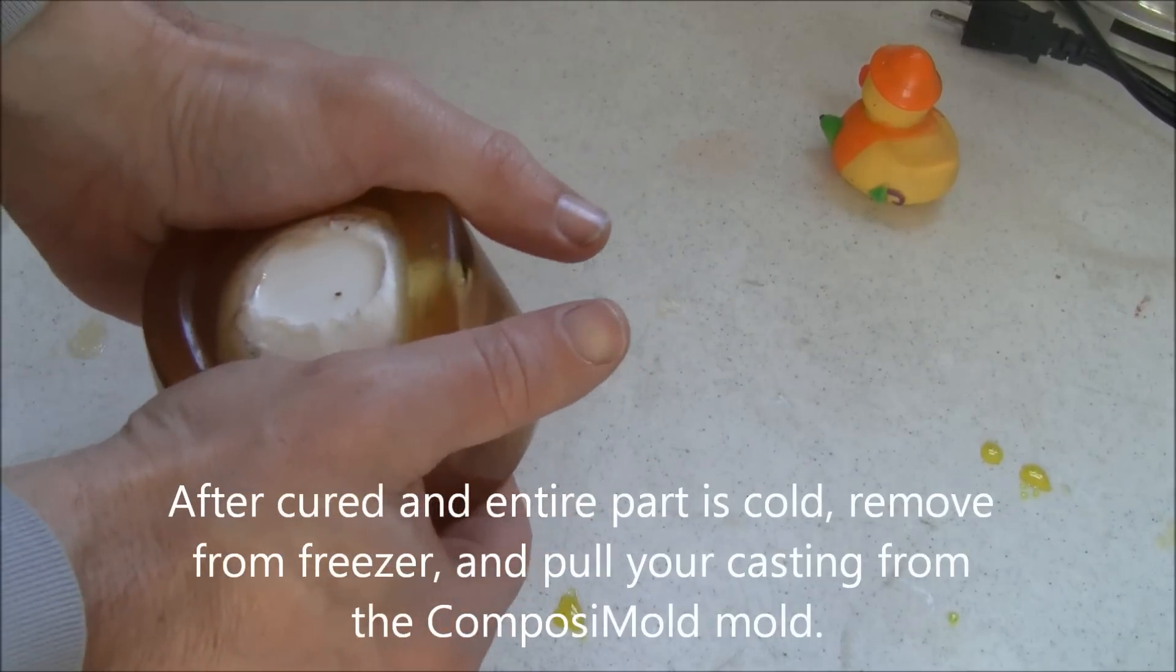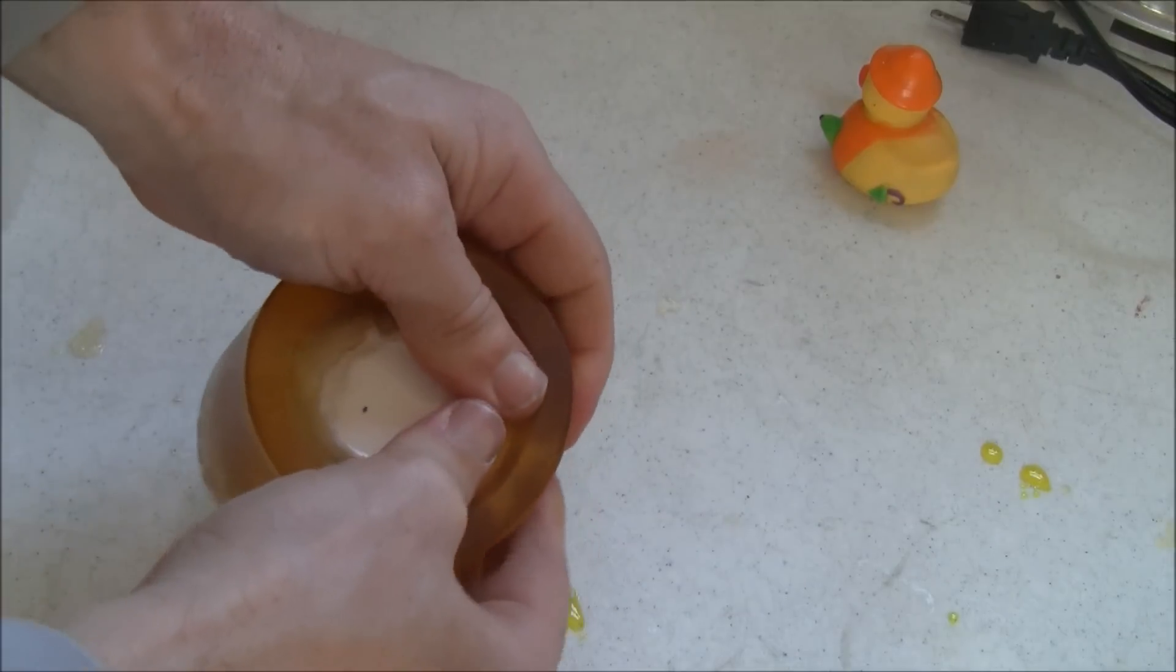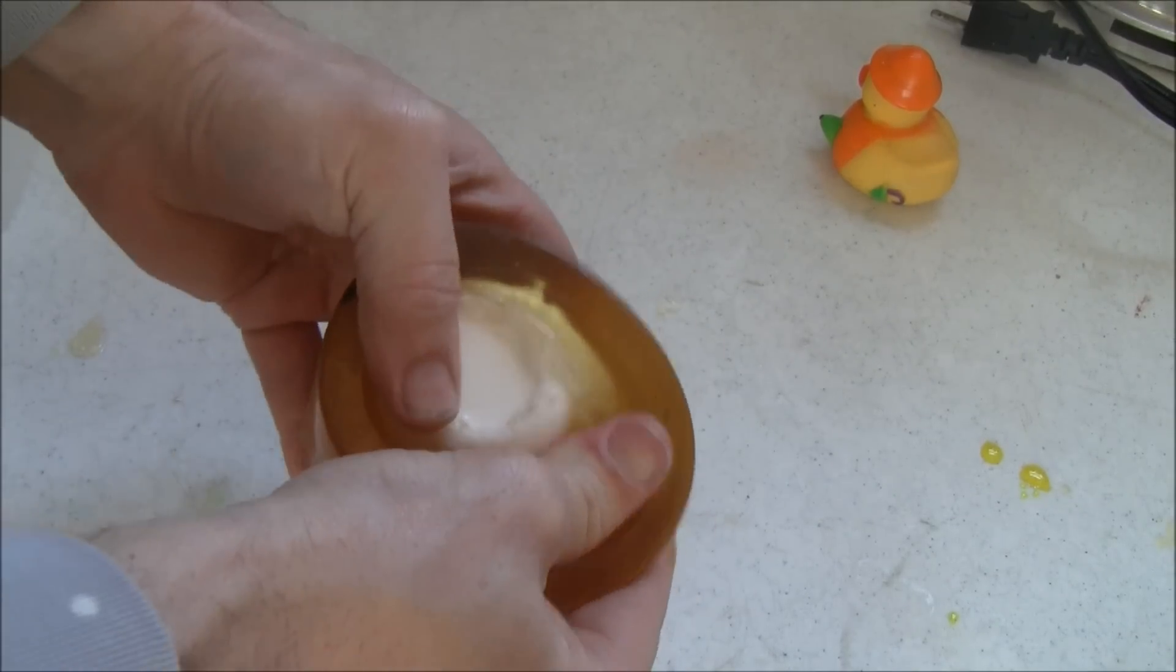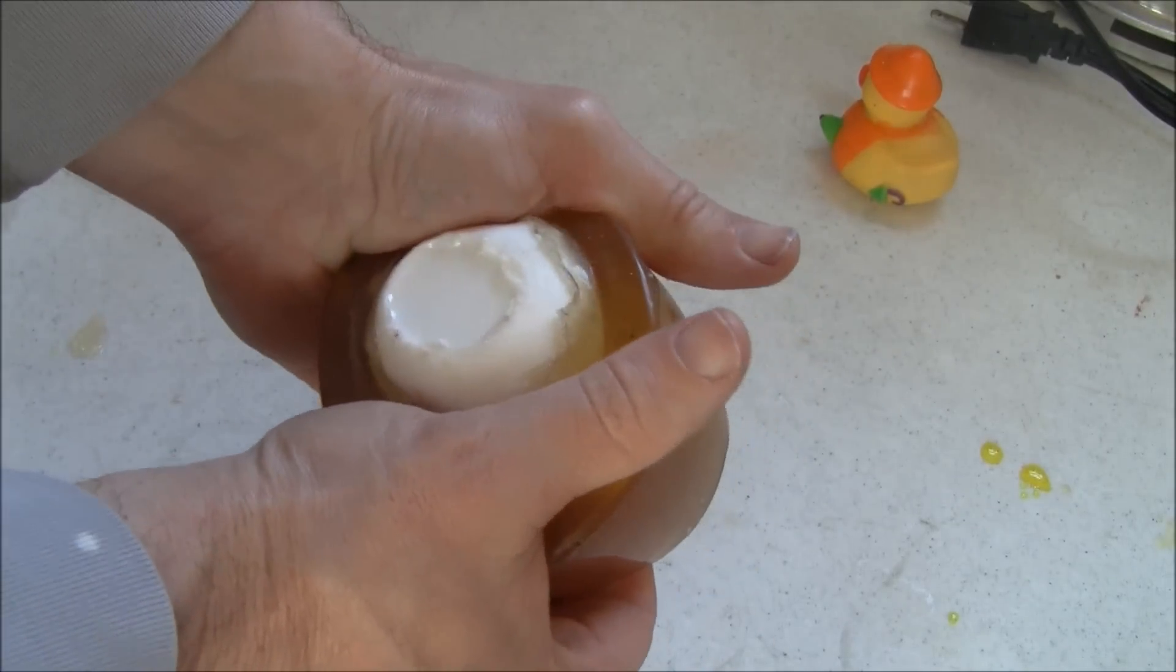If necessary, place the ComposiMold back in the freezer to keep it cold while the urethane is curing. This helps reduce any melting of the ComposiMold from the exothermic reaction that occurs with the urethane. Longer cure time resins have less of this heat.